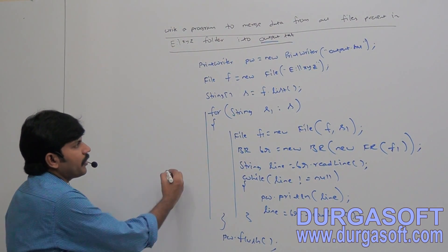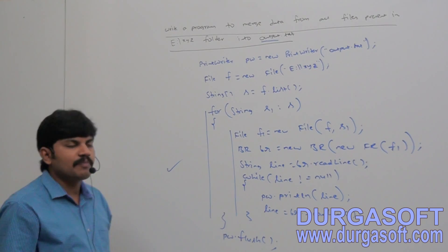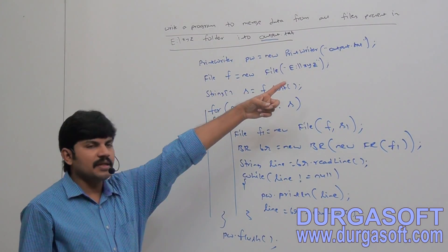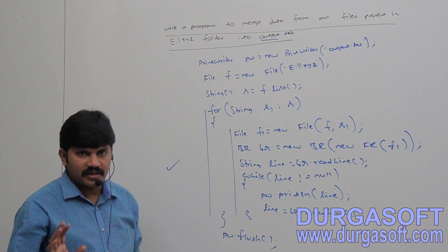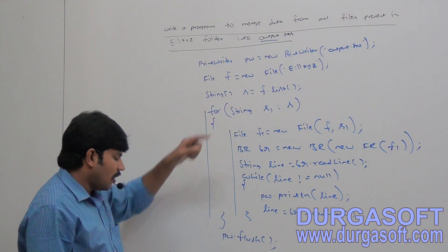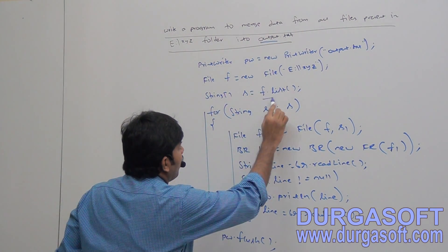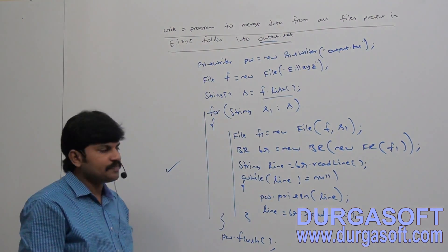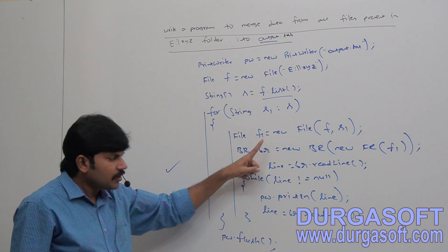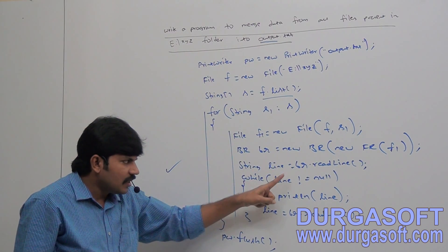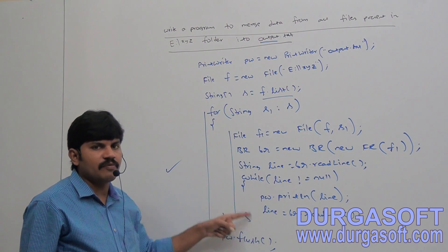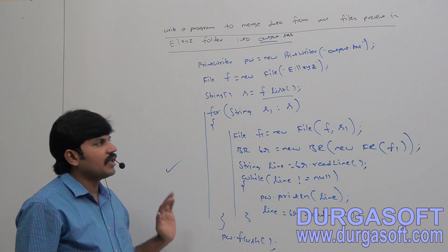That's all. If you open PrintWriter, happily the data present in all files, by default you can get inside output.txt. Simple for-each loop we are using. First get all file names. For each file name, create a file object, open BufferedReader, read the first line, and if it is not null, go for the next line. Repeat this cycle for every line present in the file.